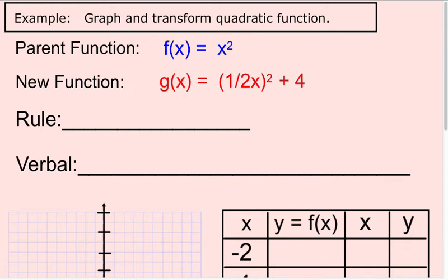This is a third example on graphing a parent function and identifying the transformations. We have a parent function of f(x) equals x squared. We call this a quadratic function. The shape of a quadratic function is in the shape of a U. Either the U's going to open up or it'll open down.